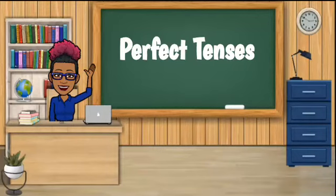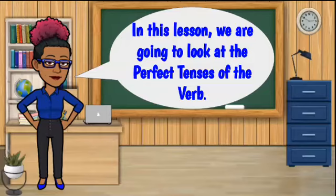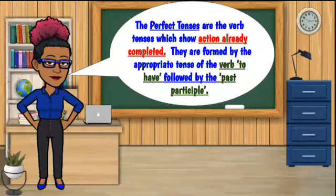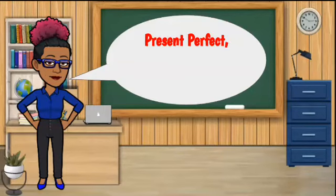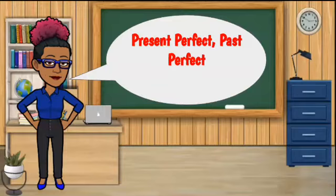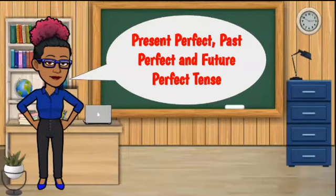Perfect Tenses. In this lesson, we are going to look at the perfect tenses of the verb. The perfect tenses are the verb tenses which show action already completed. They are formed by the appropriate tense of the verb 'to have' followed by the past participle. Our tenses will be our present perfect, past perfect, and our future perfect tense.